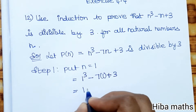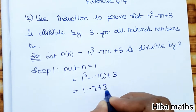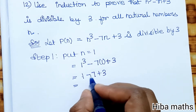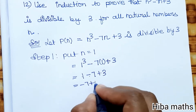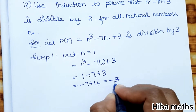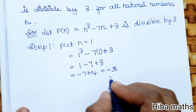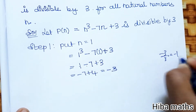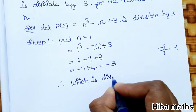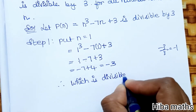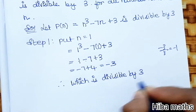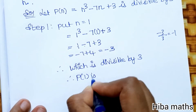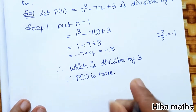1 cubed minus 7 plus 3 gives us 1 minus 7 plus 3, which equals minus 3. Minus 3 divided by 3 equals minus 1, which is divisible by 3. Therefore, P(1) is true.